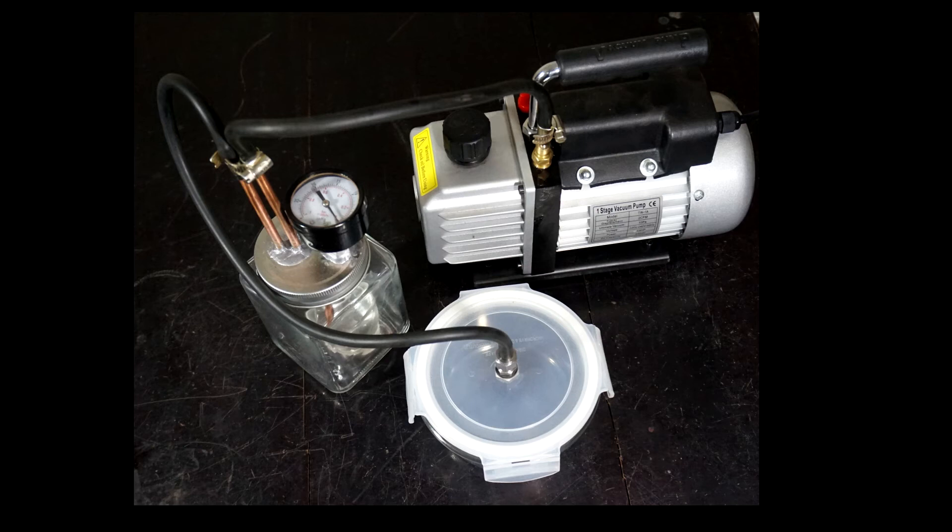This is my vacuum purging equipment. All traces of butane and acetone can be removed under vacuum. An oil trap must be used after the pump or some oil mist could contaminate the product.